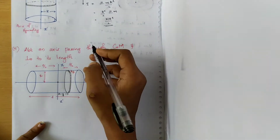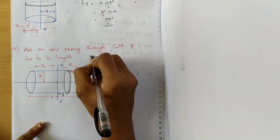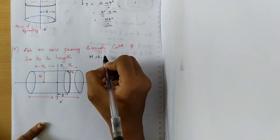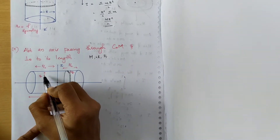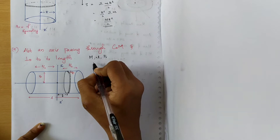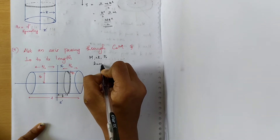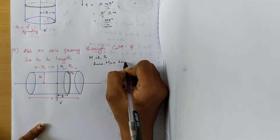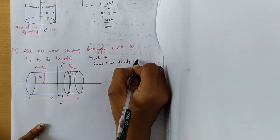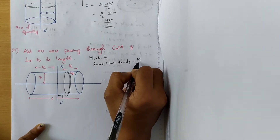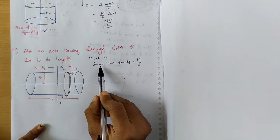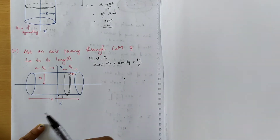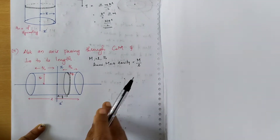We are considering a cylinder of total mass capital M, length small l, and radius capital R. We define a quantity called the linear mass density, which is given by the total mass of the cylinder divided by its total length — this is the mass of the cylinder per unit length.